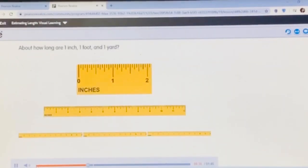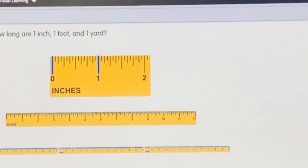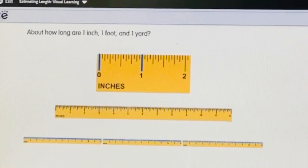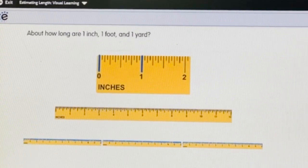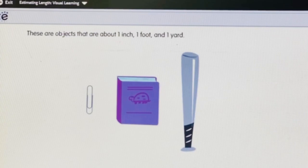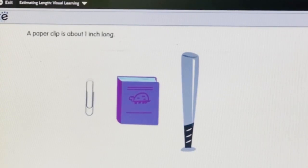About how long are 1 inch, 1 foot, and 1 yard? These are objects that are about 1 inch, 1 foot, and 1 yard. A paper clip is about 1 inch long. A book is about 1 foot tall. A baseball bat is about 1 yard long.